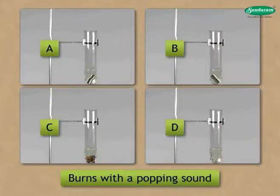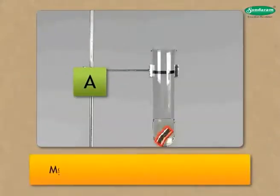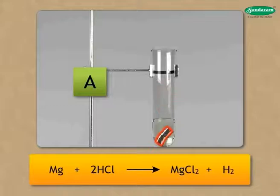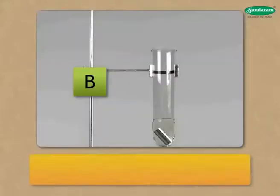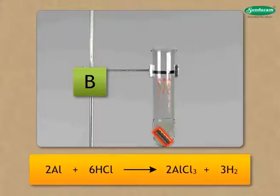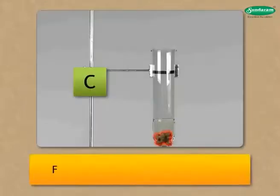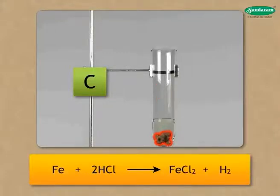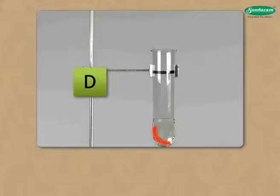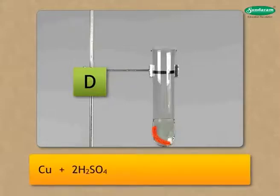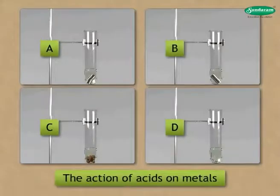In test tube A, magnesium reacts with diluted hydrochloric acid producing magnesium chloride and releasing hydrogen gas. In test tube B, aluminium reacts with dilute hydrochloric acid producing aluminium chloride and releasing hydrogen gas. In test tube C, iron reacts with diluted hydrochloric acid forming ferrous chloride with liberation of hydrogen gas. In test tube D, copper does not react with hydrochloric acid at normal or high temperature; it dissolves in hot concentrated sulfuric acid, producing copper sulfate solution and sulfur dioxide gas.